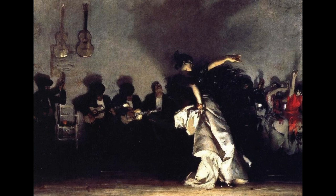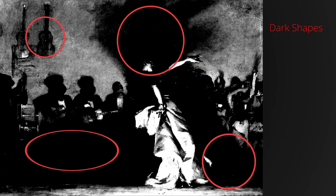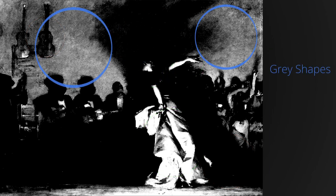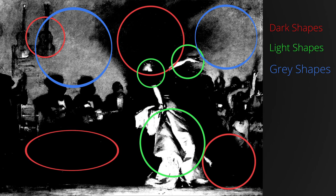Here is another example of a three-value notan structure in this painting by Sargent. Again, if we look at it in three values, we can see dark values, light value shapes, and gray shapes. And this simple three-value structure is the basis of many great masterpieces.